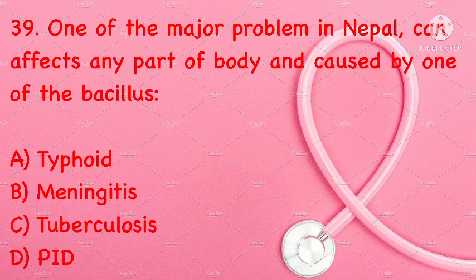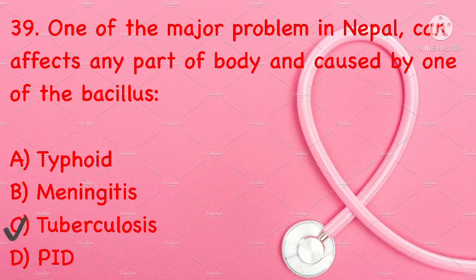One of the major problems in Nepal can affect any part of the body and is caused by a bacillus. Options: Type 5 meningitis, tuberculosis, or PID. Correct answer is C: tuberculosis.